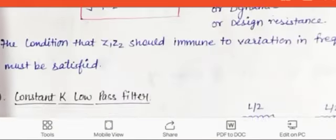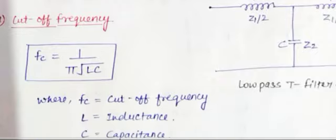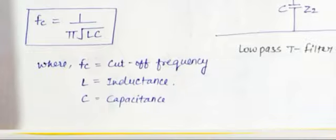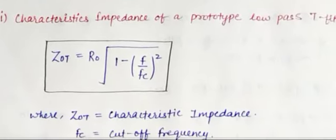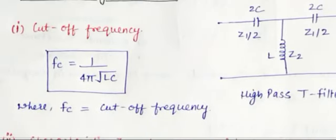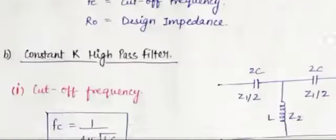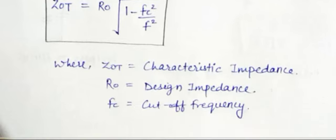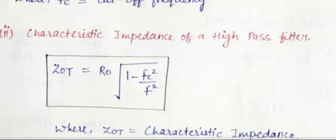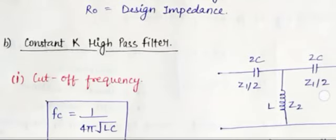Now let's look at the M-derived filter. Prototype filters are of two types: the constant K low-pass filter and the constant K high-pass filter. For the constant K low-pass filter, the cut-off frequency Fc = 1 / (π√LC). For the constant K high-pass filter, the cut-off frequency Fc = 1 / (4πLC). If you understand the prototype filter, you should be able to state the relationship, then describe the low pass and high pass filters, and draw the diagram. If you don't remember the formula, just remember the cut-off frequency formula.